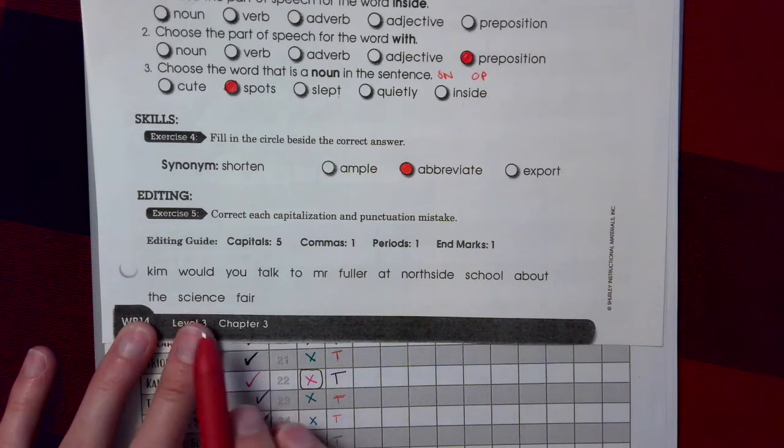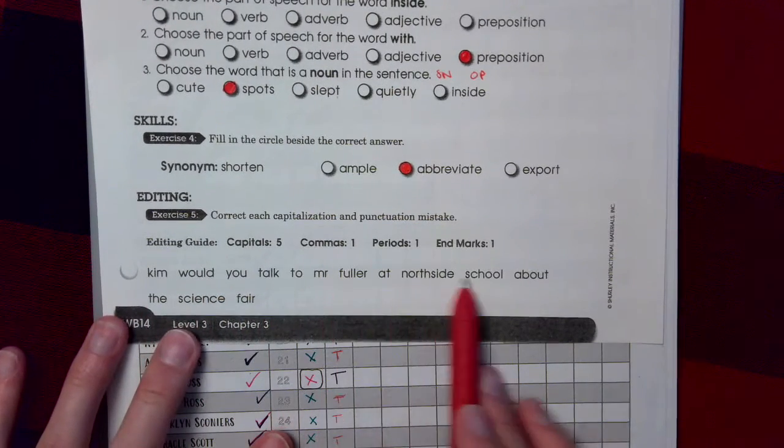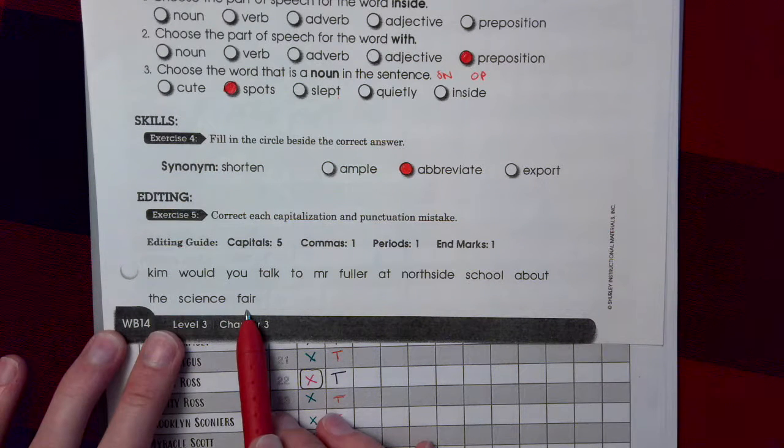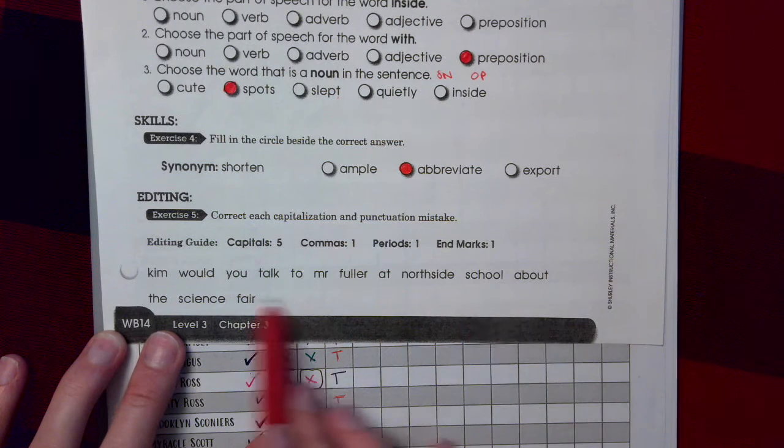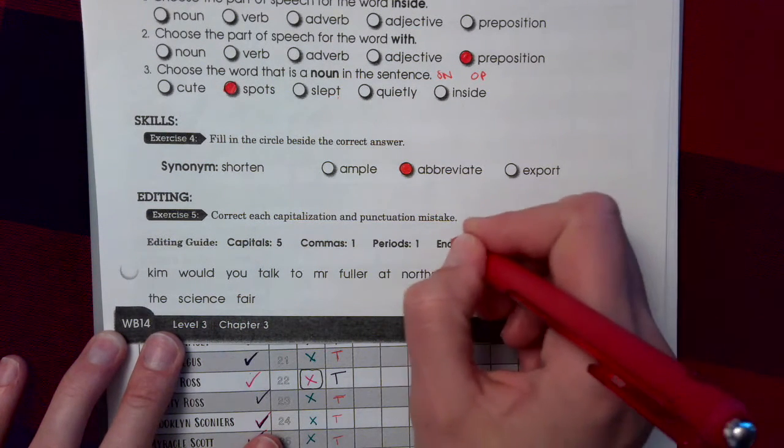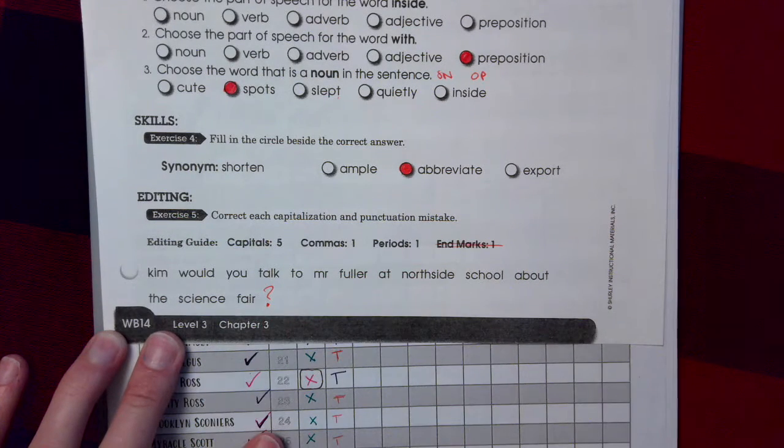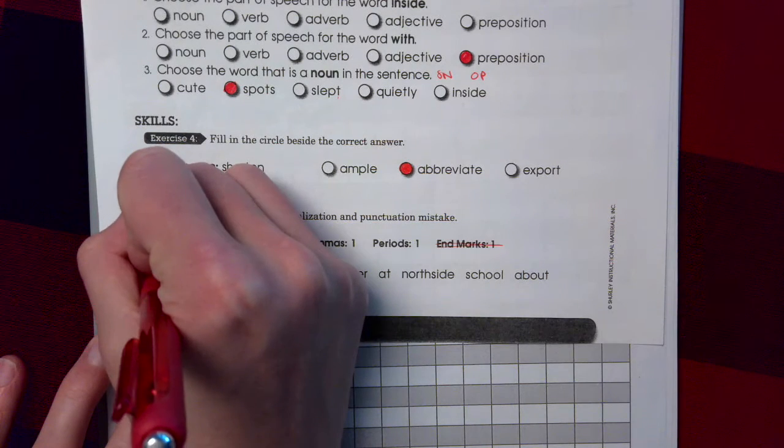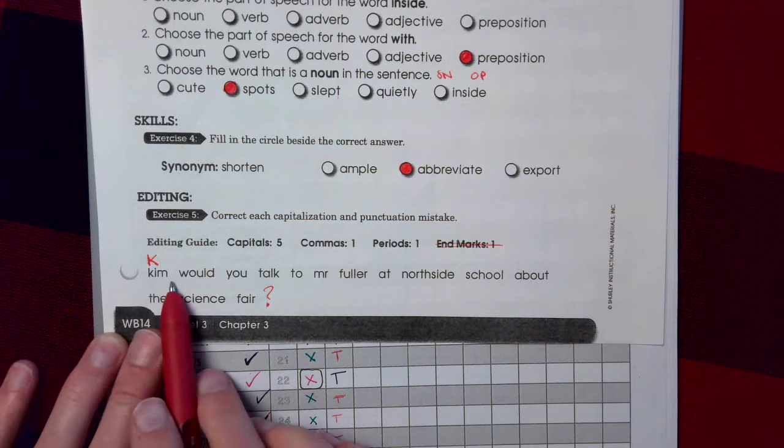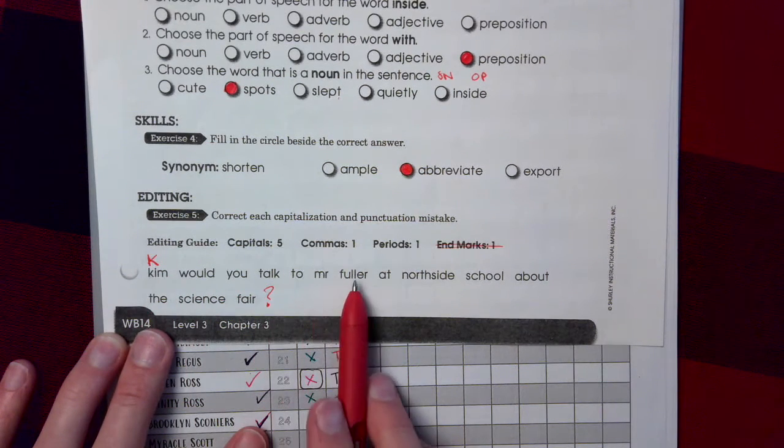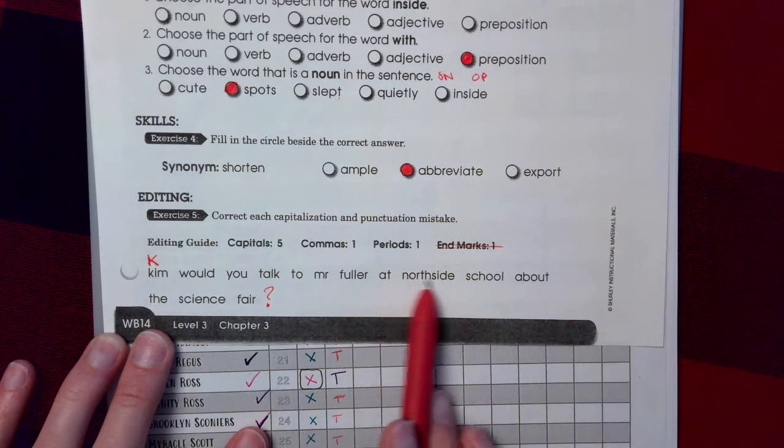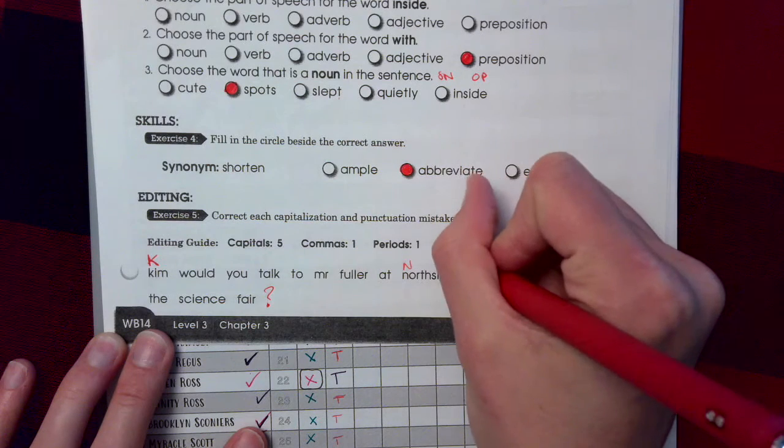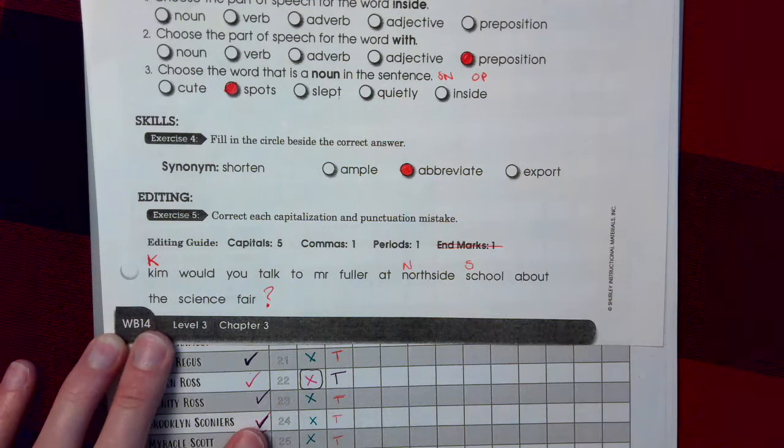All right. Now let's go through an edit. Kim, would you talk to Mr. Fuller at Northside School about the science fair? Right away, what's our N mark? Kim, would you talk to Mr. Fuller at Northside School about the science fair? You know how my voice kind of goes up at the end? That's because it's a question. Right? Let's take care of our capitals next. First word. Got to capitalize the first word of the sentence. What else would we capitalize? Kim, would you talk to Mr. Fuller at Northside School? Oh, right, that's a place, so Northside School. And then find the other name that you need to capitalize both words in.